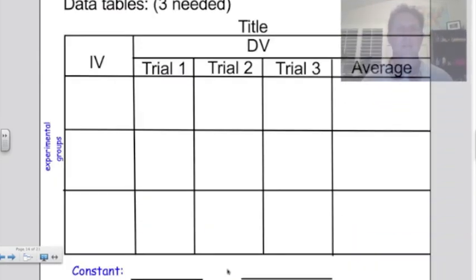Here's an example of a data table you'll need for one of your experiments. You'll need three of them, obviously, because you're running three different experiments. I've just written over here IV in the left-hand column, which stands for independent variable, and you're going to want to set up three different experimental groups. Make sure you and your teammates decide how far apart each group will be.